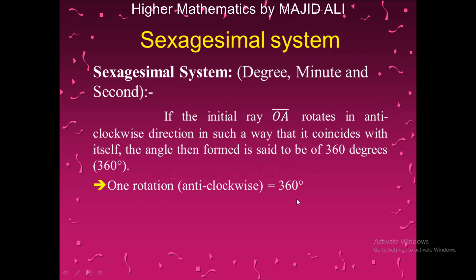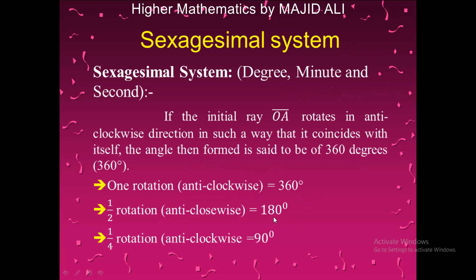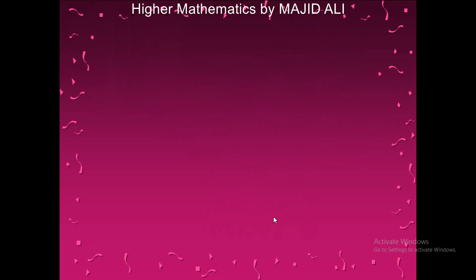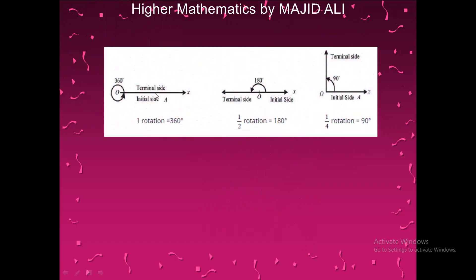One rotation is equal to 360 degrees. If we take half of that, the angle is 180 degrees. Dividing further by 2 gives us 90 degrees. As shown in the diagram, if the initial ray rotates and returns to itself it covers 360 degrees; half rotation is 180 degrees, and one-fourth rotation is 90 degrees.